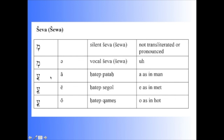The gutturals don't always behave the same as other consonants, and they don't like this simple vocal Shva. So when they take Shva, they combine it with one of the short vowels. A guttural, when it has a reduced vowel with an A vowel — notice that these are marked with little scoops on the top — will combine it with a Patah. So Patah plus Shva equals a Hataf-Patah, pronounced A as in 'man.' The Hataf-Segol, which is a Segol plus Shva, is an E as in 'met.' And then the Hataf-Qamats, a Qamats plus Shva, is an O as in 'hot.'